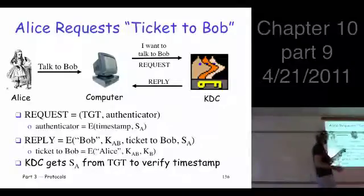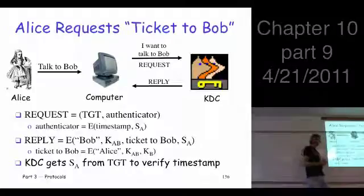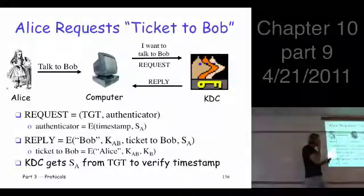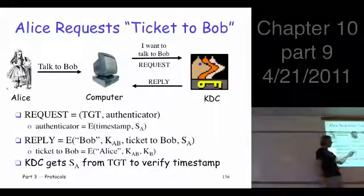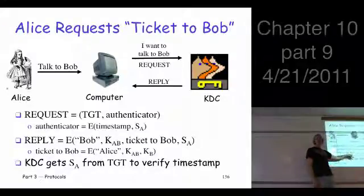So what's in the request? The request includes an authenticator, the KDC can check that and make sure it's current within the acceptable clock skew. The reply comes back and it says, okay, Bob. Why does it tell you Bob? Don't you know you're trying to talk to Bob here?